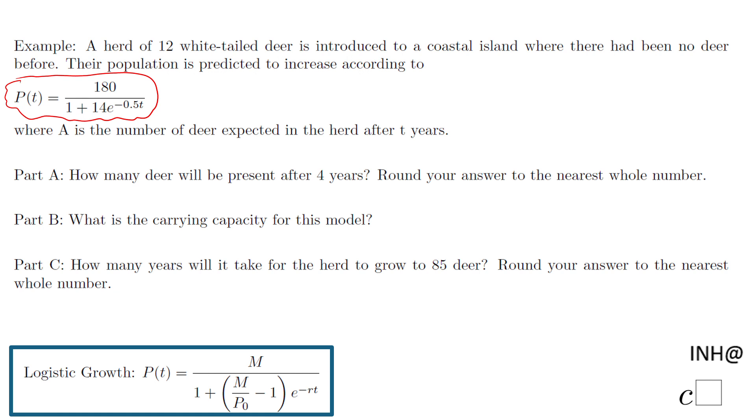On Part A, we need to find out how many deer will be present after four years, which means simply t equals four, or in other words, P of four. And that will be 180 over 1 plus 14 times e to the power of negative 0.5 times t.